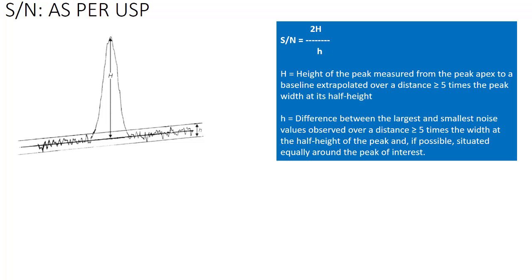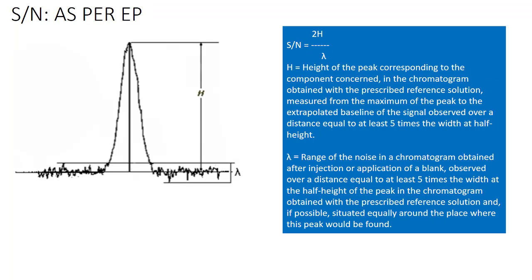Quite big one. No worry, we will understand this. And if you look at the EP, it is almost one and the same. The signal-to-noise ratio is equal to 2H divided by lambda,